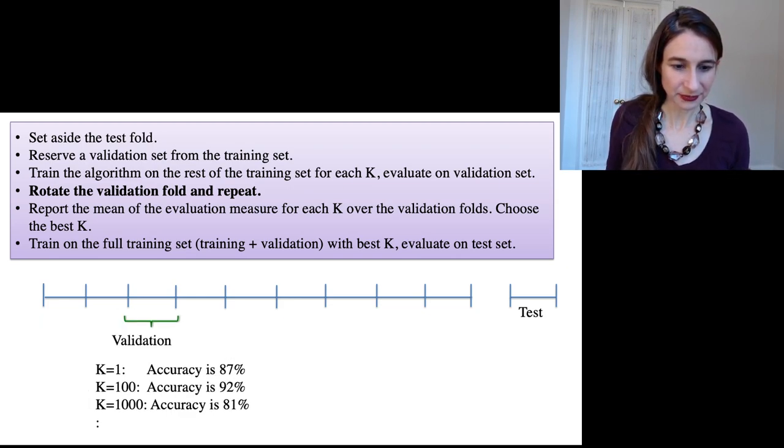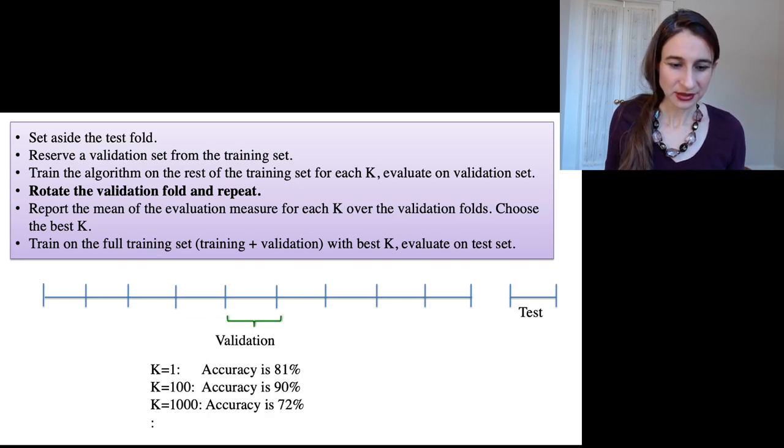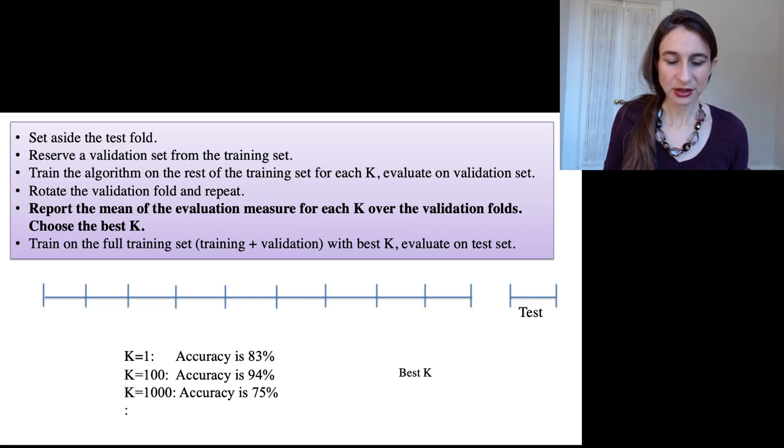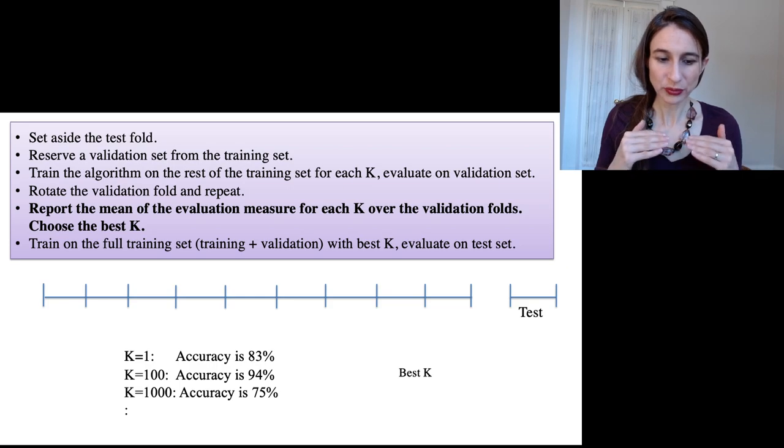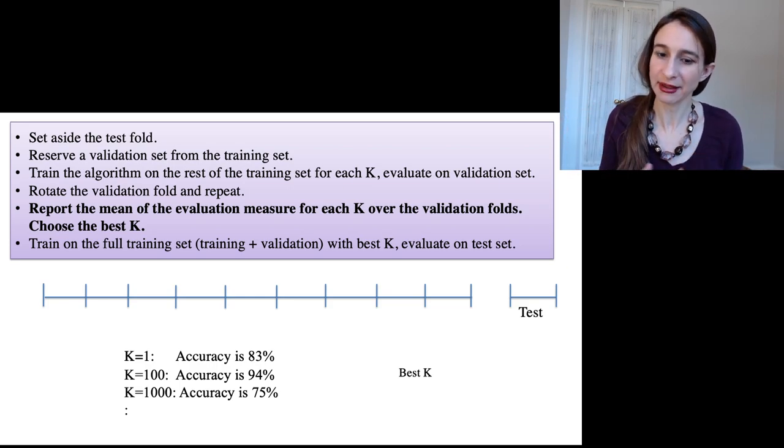I do this over and over, rotating which fold is the validation fold. Then what I find in the end is that there's one value of K that performed the best across all of the folds, and I'm going to choose that K.